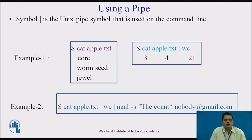Example 2: passing the output of one command to another using wc, and then sending the result to a mail account with the subject 'the count'. We type: cat apple.txt | wc | mail -s 'the count'. The subject name is 'the count' and this will be sent to nobody@gmail.com.